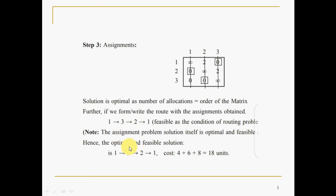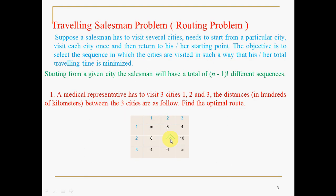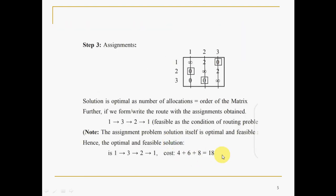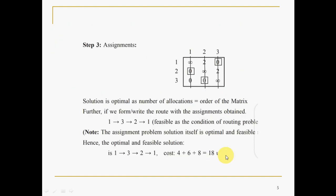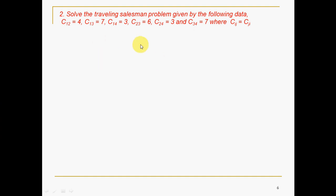The assignment problem solution here is both optimal and feasible. The optimal and feasible solution gives a route of 1→2→3→... and the cost is taken from the parent matrix. The total is 18 units, meaning 1800 kilometers is the solution. The additional constraint of TSP is: the person who starts from the home city must come back to the same home city, and all intermediate cities must be covered exactly once.